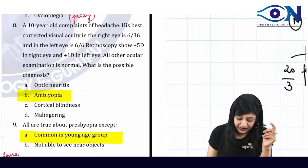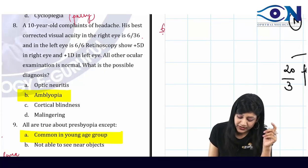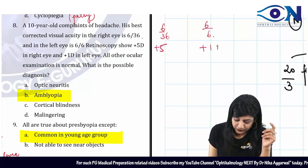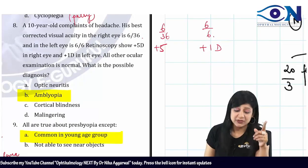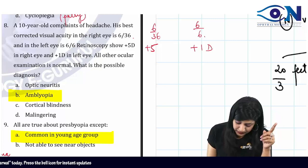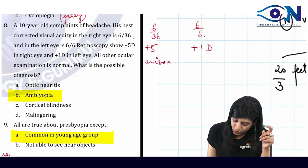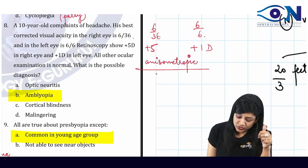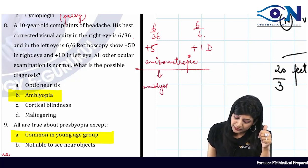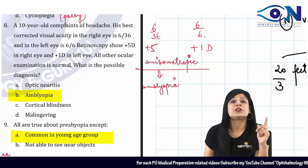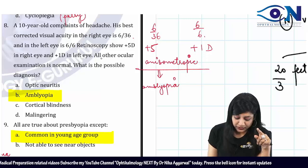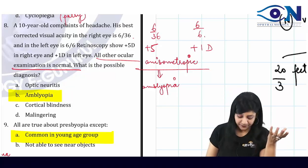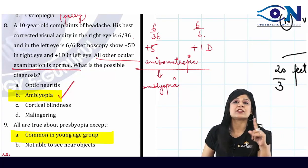Question 8: A 10-year-old boy complains of headache. Best corrected visual acuity is 6/36 in one eye and 6/6 in the other. Retinoscopy shows plus 5 diopters and plus 1 diopter — a large difference in refractive power between the eyes, which is anisometropia. This anisometropia leads to amblyopia. Since all other ocular examinations are normal, the best answer is anisometropic amblyopia.